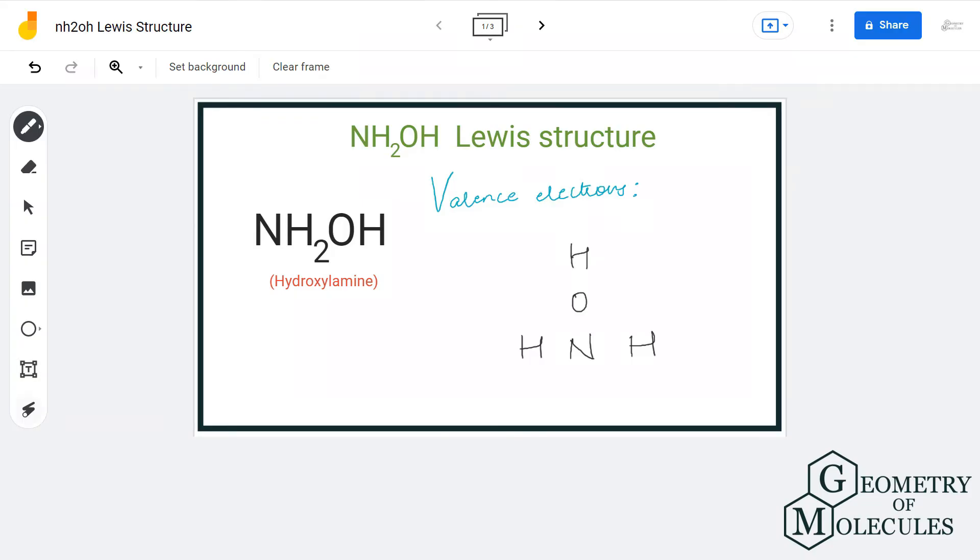Hi guys, welcome back to our channel. In today's video, we are going to help you with NH2OH Lewis structure. It is a chemical formula for hydroxylamine, and to determine its Lewis structure, we will first look at the total number of valence electrons.